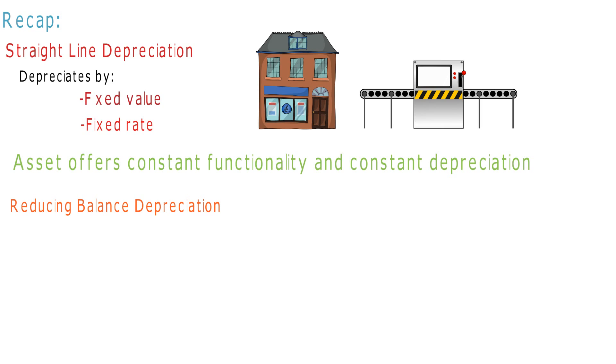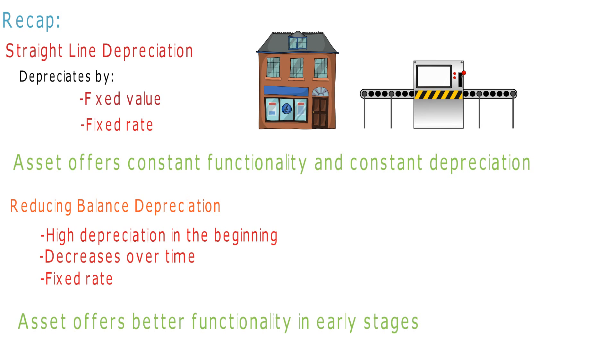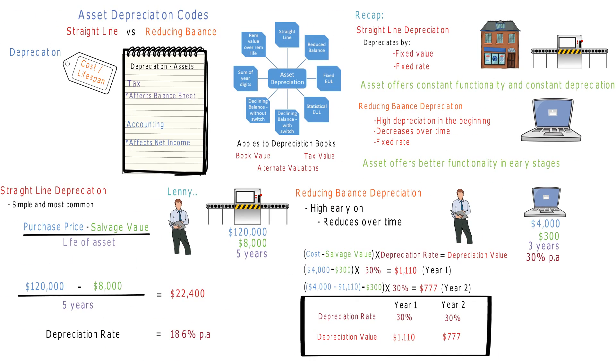Reducing balance depreciation is where an asset has a high depreciation in the first period, which slowly decreases as time goes on, even though the rate of depreciation is the same. This is better for assets that have better functionality in their early stages of use, like computer equipment. Straight line is a more accurate method of asset depreciation when dealing with fixed assets, whereas reducing balance depreciation is more common with assets that will be technologically obsolete in later years.